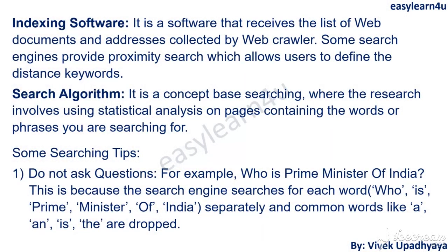The second program is indexing software, which receives all the links from the web crawler, arranges them from most closely matched to least closely matched content, and displays them in the web browser. The third program is the search algorithm, which performs a methodological search based on statistical analysis of web pages containing the searched words. This algorithm searches content in web pages and delivers all pages containing those words, returning a number of links which you can access one by one.